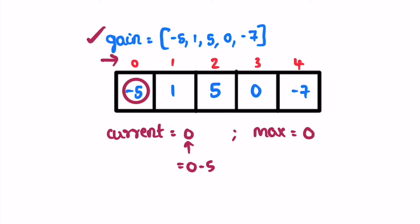Zero minus five is minus five, and max of zero and minus five is zero. Now we go for the next element. The next element is one, so we add it into the current variable and get minus four.